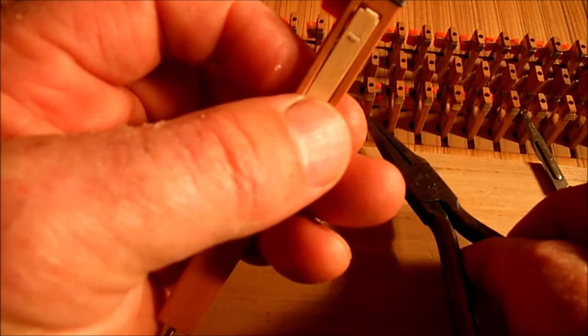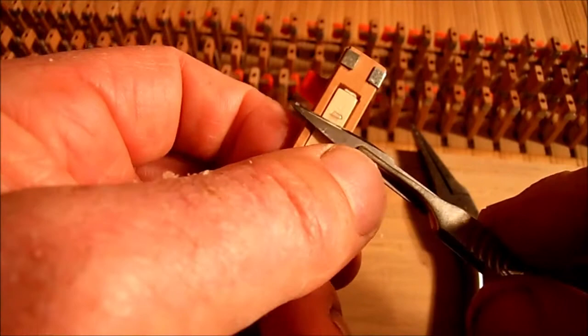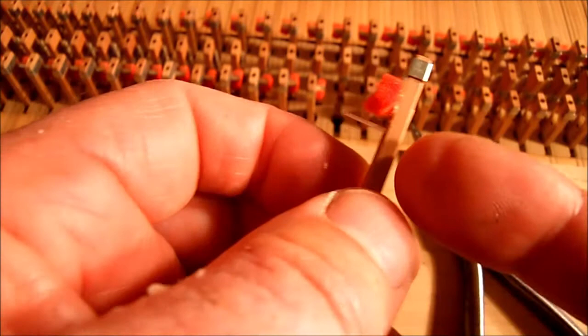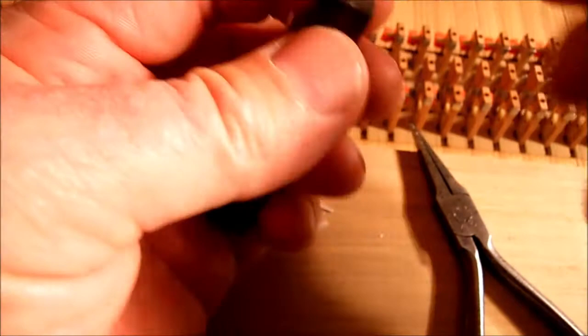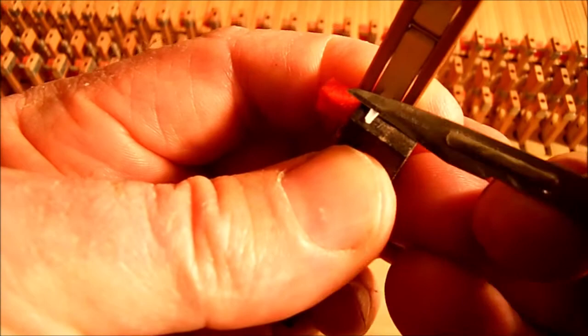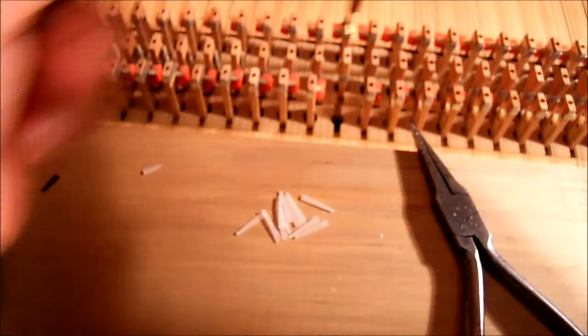Now you're going to need to trim off the back of the plectrum, just to make sure it's completely flush, and doesn't snag the strings behind, and then cut the front to length. There's a slight groove in the damper, so I can estimate where this cut should be, and then try it for length in the harpsichord.